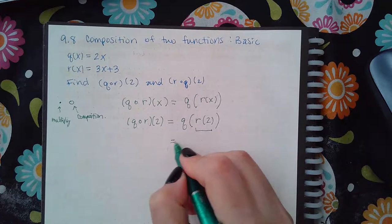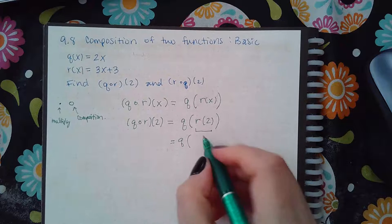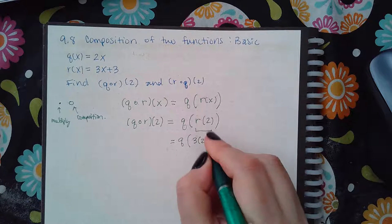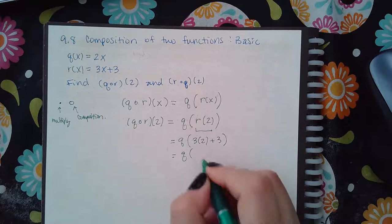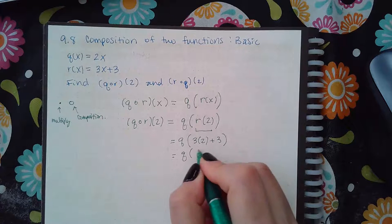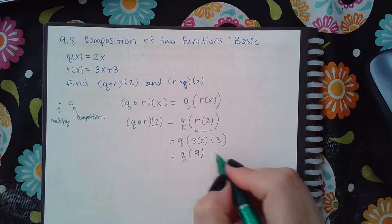And so what does that mean? I have to figure out what r of two is first. So plug two into r, that looks like this, and simplify that first. You get 6 plus 3, which is 9, and then plug 9 into q, and I get 2 times 9, which is 18.